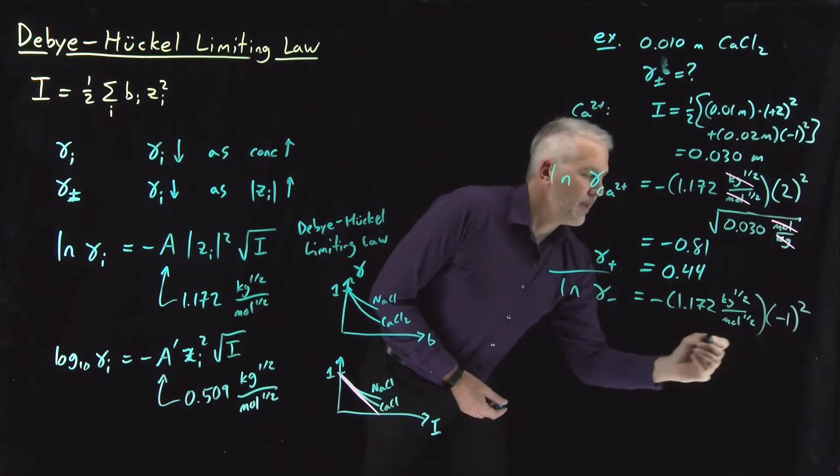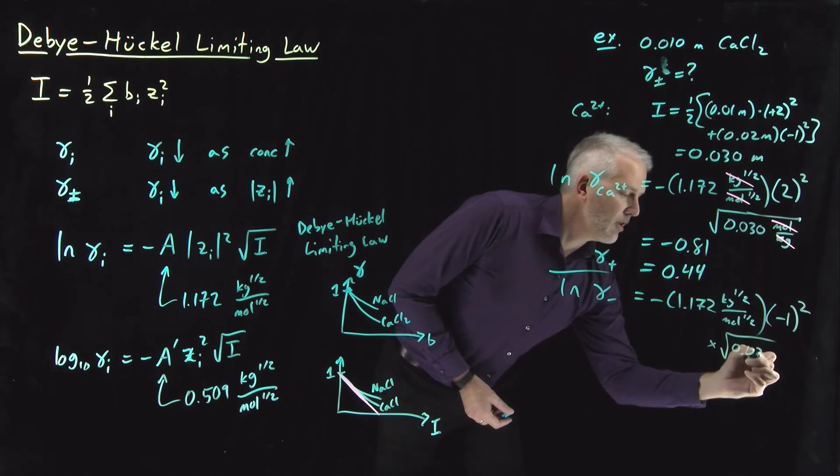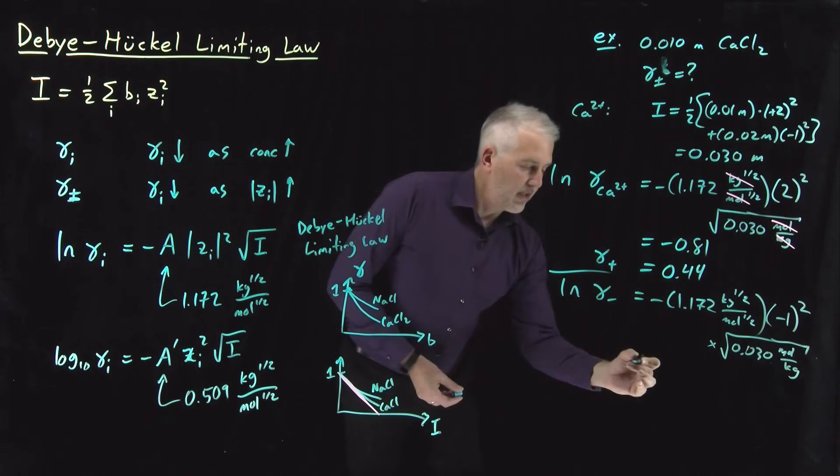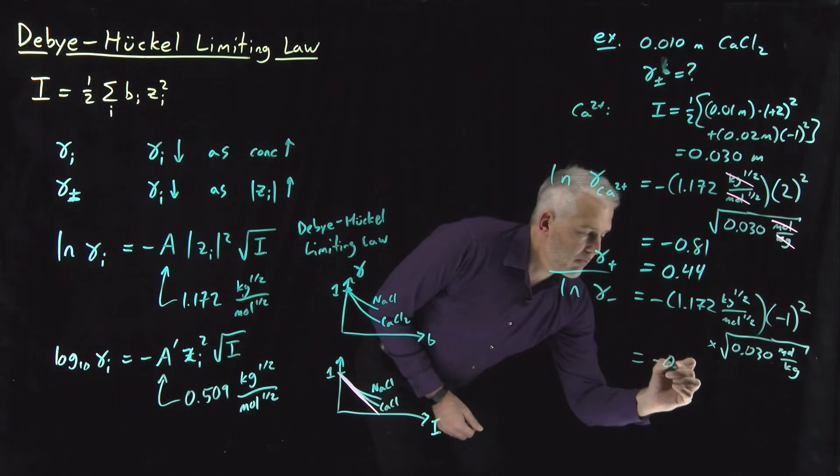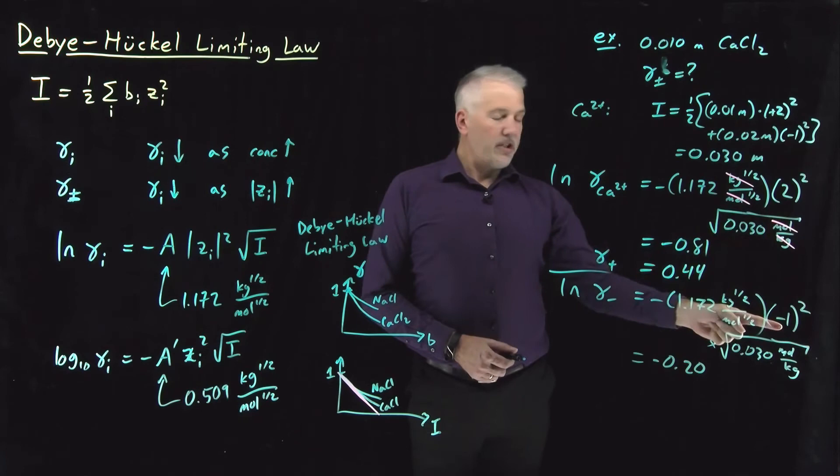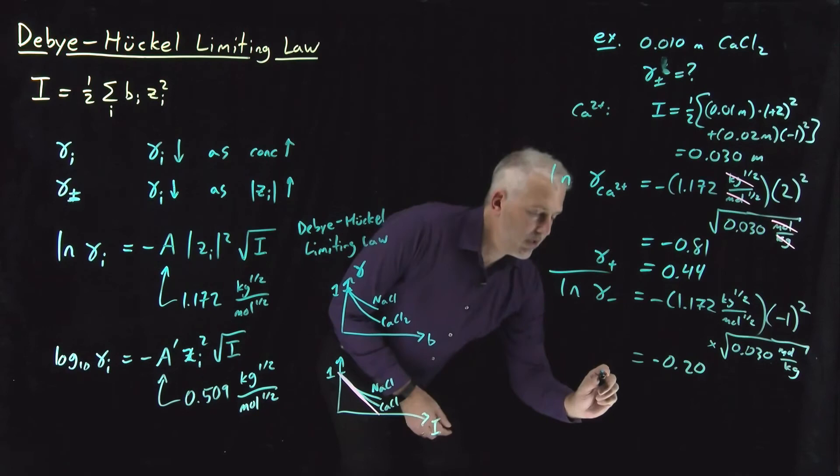The ionic strength is exactly the same, so I'm multiplying still by the square root of 0.03 molal. That arithmetic works out to be smaller by a factor of 4. The only difference in the arithmetic is I've turned this 4 into a 1. So instead of negative 0.81, I have negative 0.2,